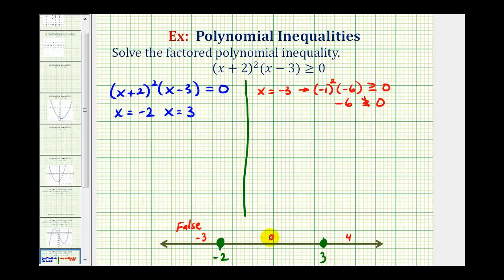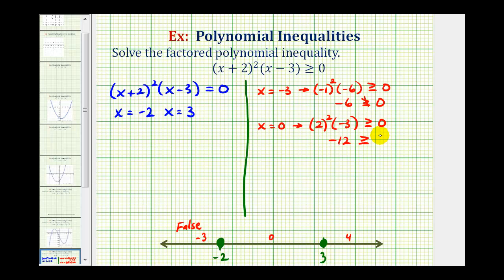For x = 0: (0 + 2)² × (0 − 3) = (2)² × (−3) = 4 × (−3) = −12. Negative twelve is not greater than or equal to zero, so this is false. The middle interval is also not part of the solution.